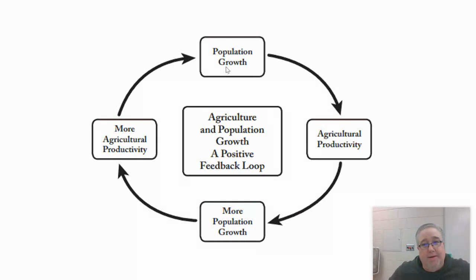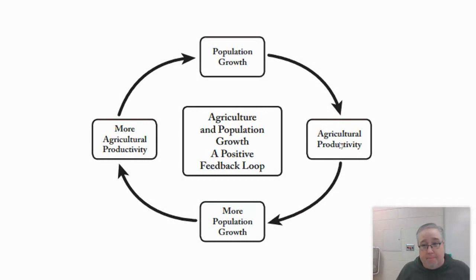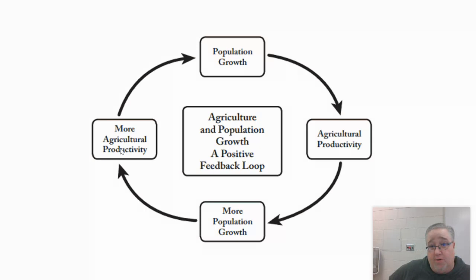We're up to 7.8 billion people here in 2021 and rising, so we're going to have to get innovative and find ways to produce more food for everybody to eat. That's where agricultural productivity comes in. But if we're producing all this food, we're going to increase lifespans, put more food in people's mouths, and that is going to lead to more population growth, which will eventually lead to the need for more agriculture. You can look at this as a never-ending loop — that's a positive feedback.